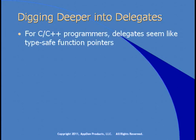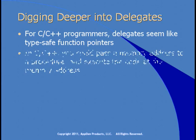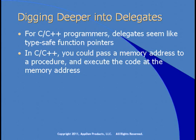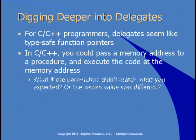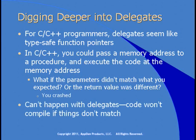If you have a C or C++ background, delegates probably seem a lot like type-safe function pointers — which really is what they are. In C or C++, you could pass a memory address to a procedure as a parameter and execute the code at that memory address; it was very commonly done. But what if the parameters didn't match what you expected, or the return value was of a different type? In that case, you were pretty much guaranteed to crash. This can't happen with delegates because the code simply won't compile if things don't match.